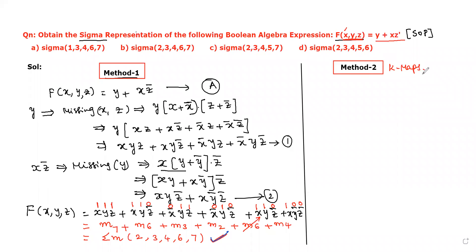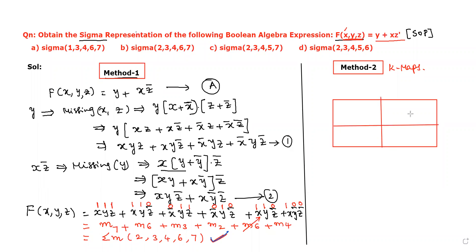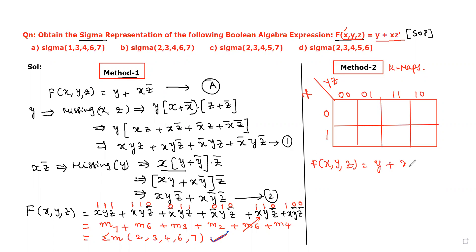Now let us move to the second method using K-maps. A three-variable K-map is required because there are three input variables: x, y, and z, giving a total of eight minterms. x is the MSB so it is placed on the left side, and the remaining two variables y and z are on the right side. For x we assign values 0 and 1, and for y,z we assign 00, 01, 11, 10. We want to insert 1s in the corresponding minterm boxes for each product.